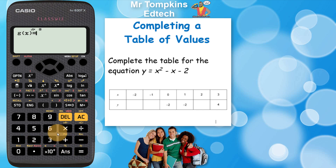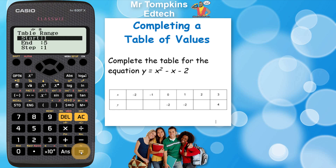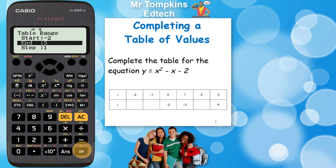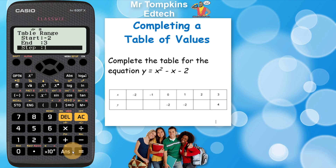When I press the equals button, the very newest model will say g of x is equal to, giving you the opportunity to enter a second function — I don't need that here. So I'm just going to press equals again and I get on to the range of values. The start value is the smallest value of x on your table — my table starts at negative 2, so I press negative 2 and then equals. The end value is 3, so I press 3 and equals. The step is 1, as the x values go up in ones.